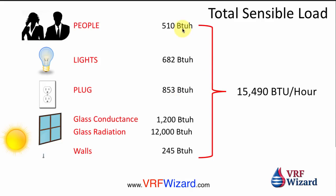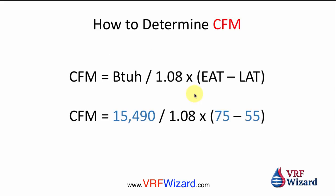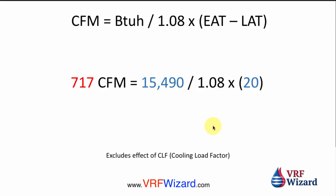Adding all those sensible loads together — people load, lighting load, plug load, glass conductance, glass radiation, and wall conductance — gives a total of 15,490 BTUs per hour sensible. To determine the CFM, plug the values into the sensible heat equation: we know the room design temperature, we know the supply air temperature, so we solve for CFM. The result is 717 CFM required for that room based on that load.